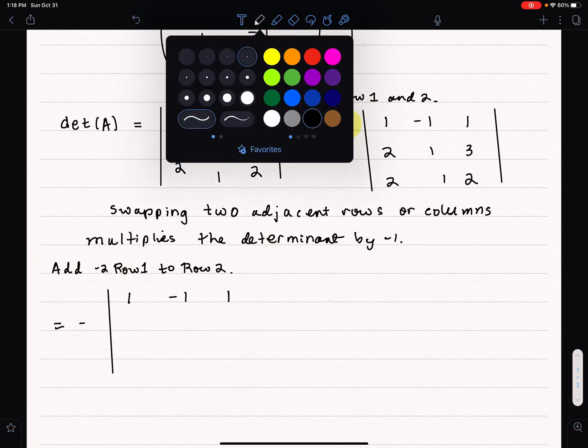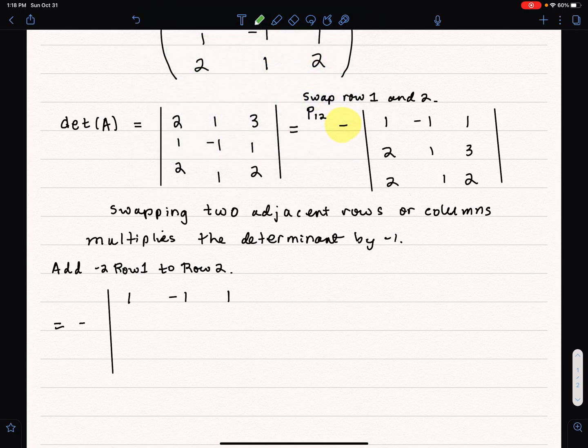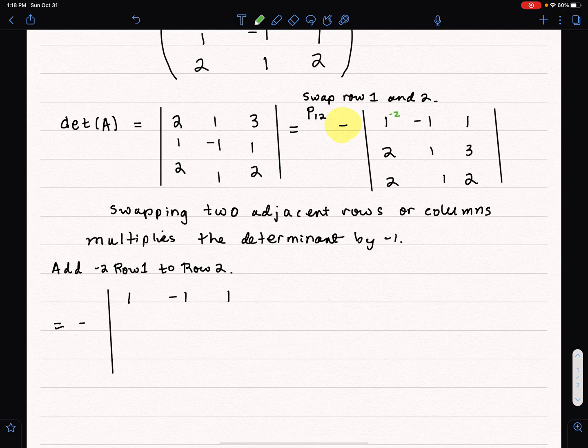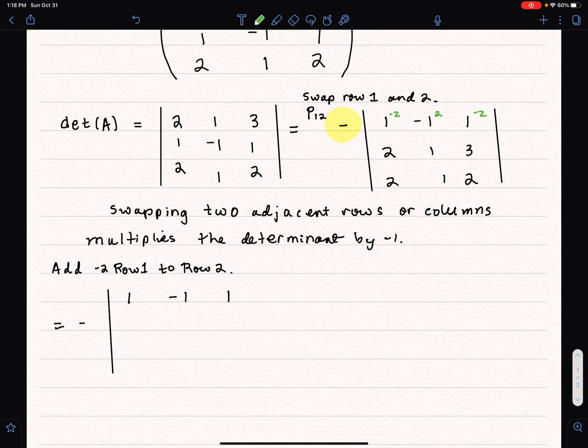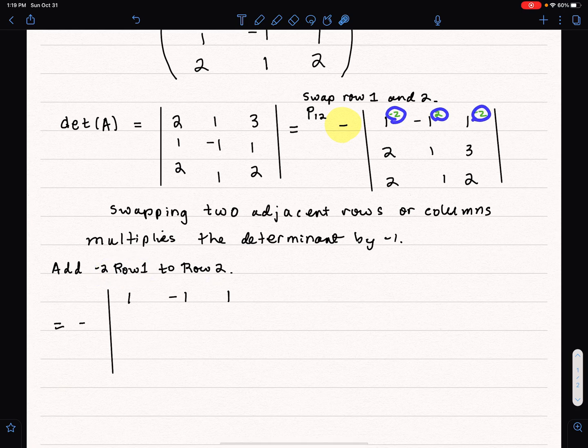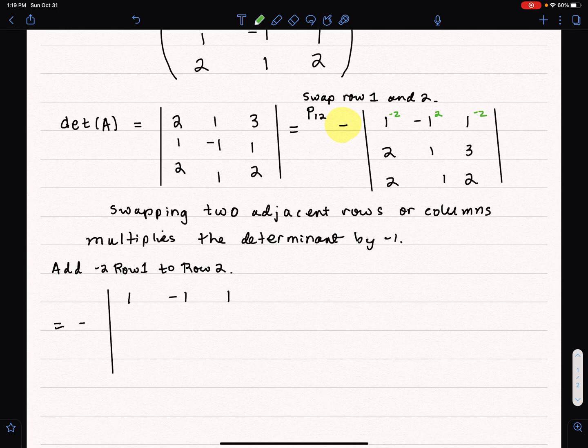Multiplying a row by a number and adding it to another row does not change the determinant at all. I'm going to multiply row 1 by negative 2 and add to row 2. I'll put that up here to help me out. Looks like it's good.